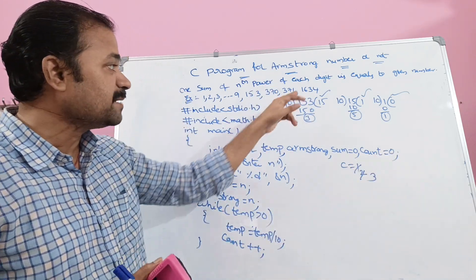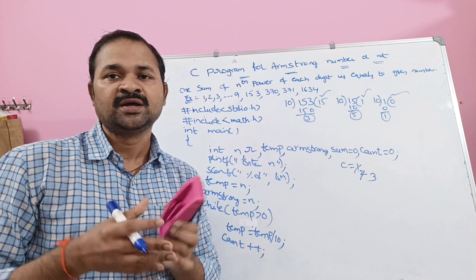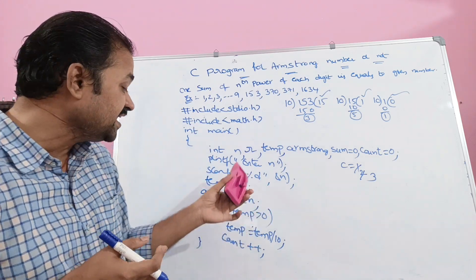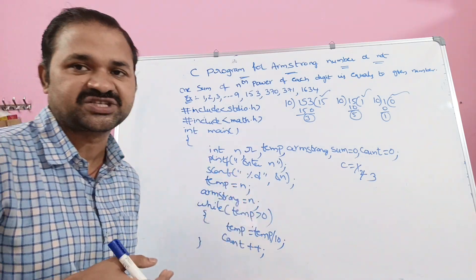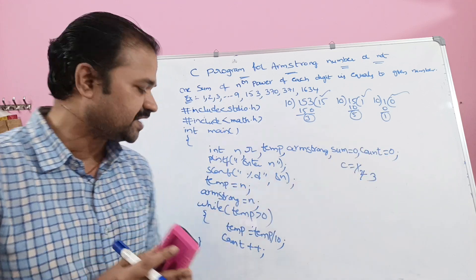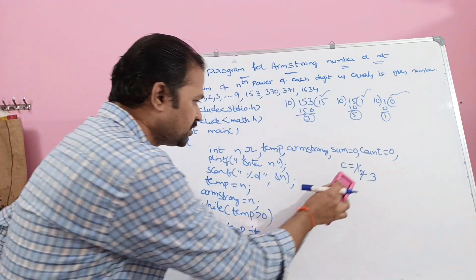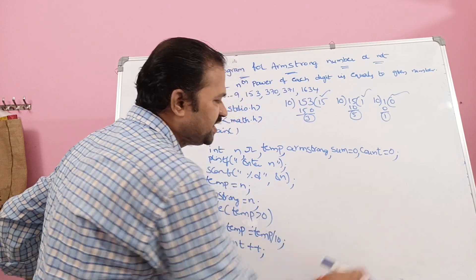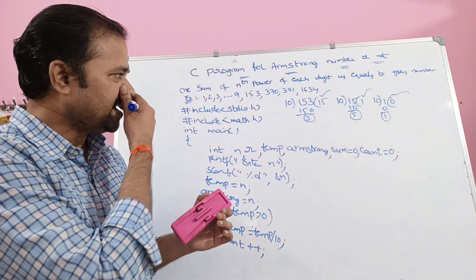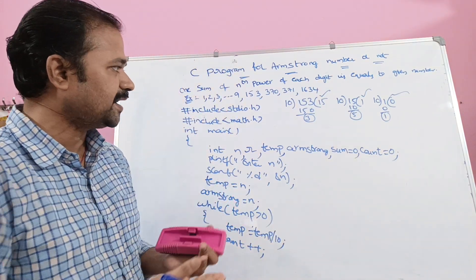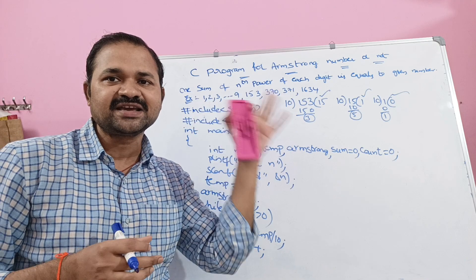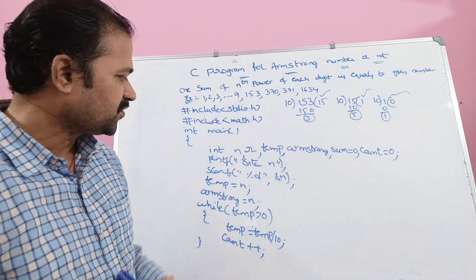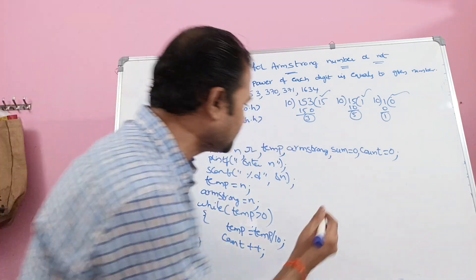Suppose the number is 1634, which has 4 digits. Then we would need 4 iterations, and count would become 4. So the number of digits is now calculated.